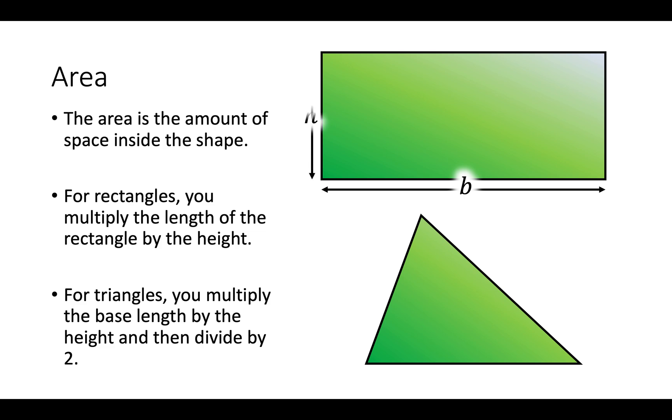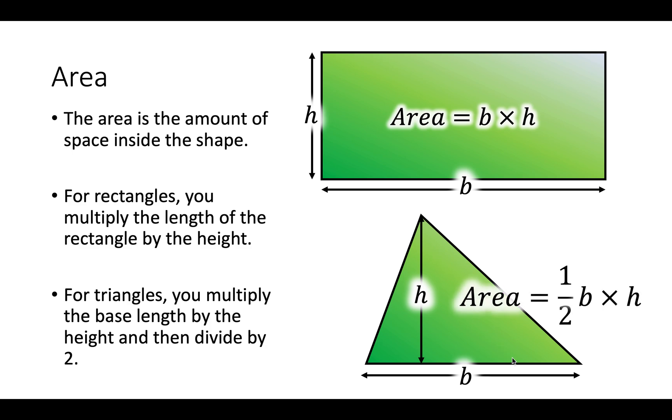For a rectangle that's the base, that's the height, you multiply them together. For a triangle you have the height which goes straight up from the bottom to the top and the base, you multiply them together and then half it. Notice the height of the rectangle goes straight from the bottom to the top at right angles. Ok?